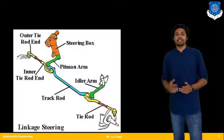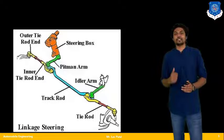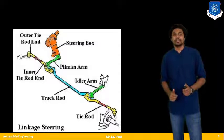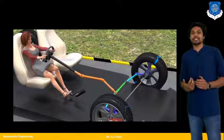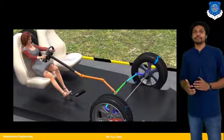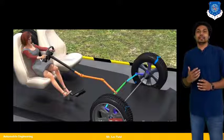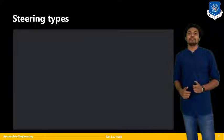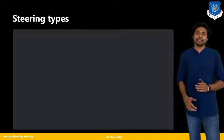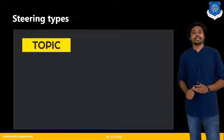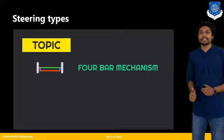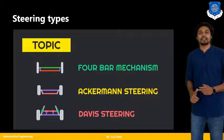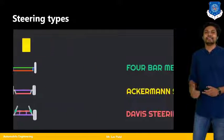Now let us continue with the steering system — how the actual steering system or different steering geometries are going to affect my overall driving condition. We will see different types of steering, in which we will cover three different topics: first is the four-bar mechanism, that is the basic mechanism of steering type; second is the Ackermann steering; and the third one is the Davis steering.